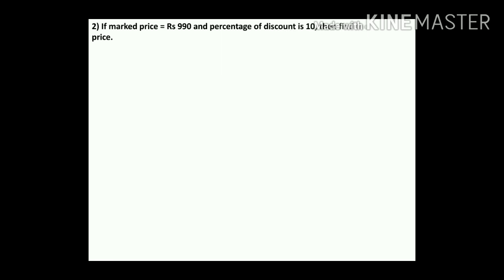Question number 2: if marked price equals rupees 990 and percentage of discount is 10%, then find the selling price. Marked price is given and percentage of discount is given; we have to find the selling price. First, we convert the percentage discount into rupees. Given: MP = rupees 990, discount = 10%. Find: selling price.